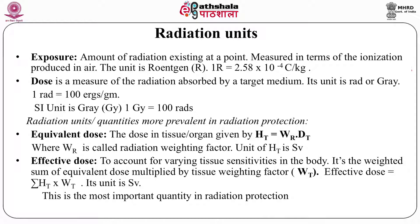The most relevant quantities in radiation protection are equivalent dose and effective dose. Equivalent dose is the absorbed dose in a tissue or organ multiplied by the radiation weighing factor (WR). This factor is needed because different types of radiation have different biological effects for the same absorbed dose. So equivalent dose equals the radiation weighing factor multiplied by the absorbed dose in a tissue or organ.